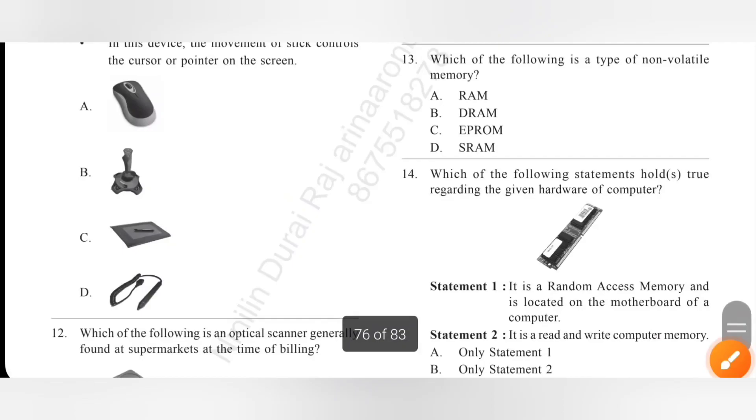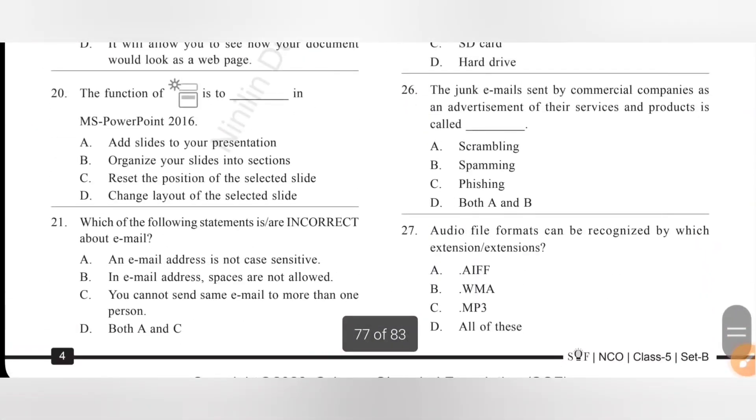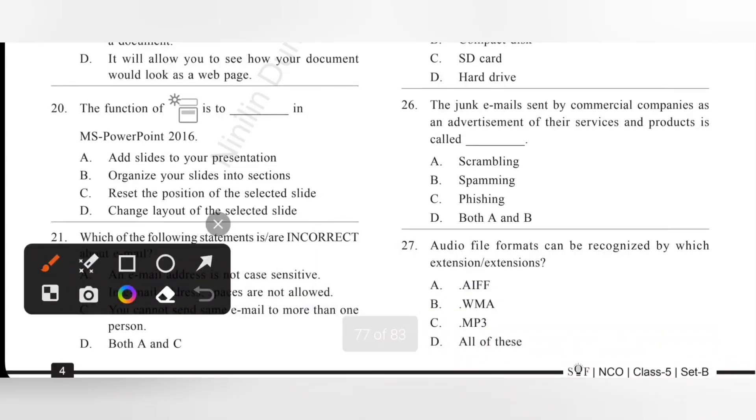Question 26: The junk emails sent by commercial companies as an advertisement of their services and product is called spamming. So, option B is the correct answer. It is known as spamming.